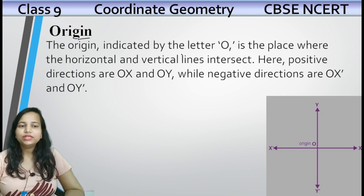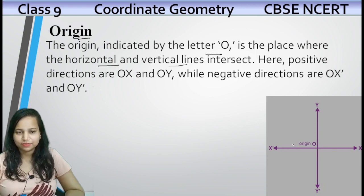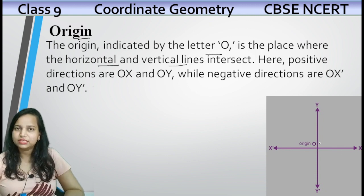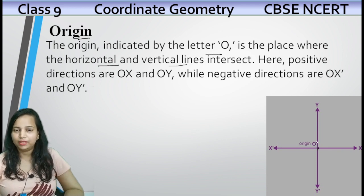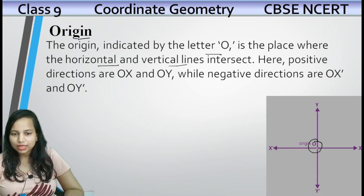Origin — indicated by the letter O — is the place where the horizontal and vertical lines intersect. Yeh plane ke andar humare paas do perpendicular lines hain: x-x dash and y-y dash. Jahaan pe yeh dono lines intersect kar rahi hain, woh origin hai. Jaise hum number line mein jaante hain, wahan zero hota hai.